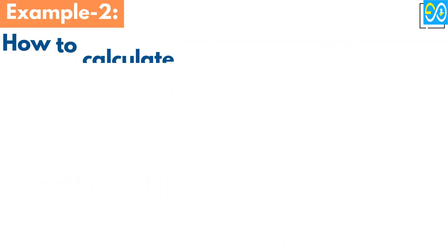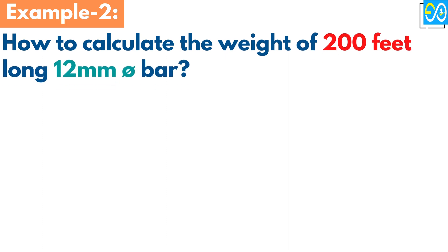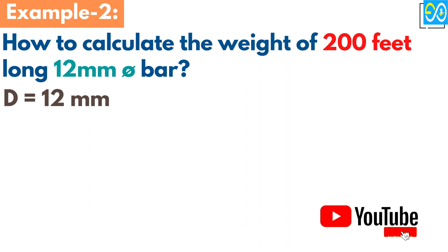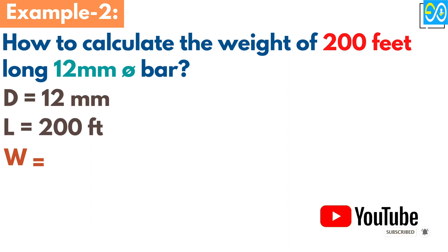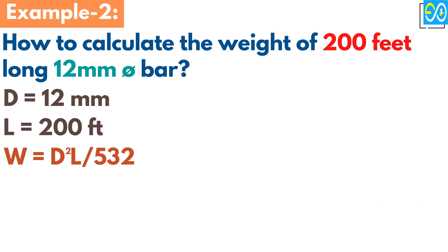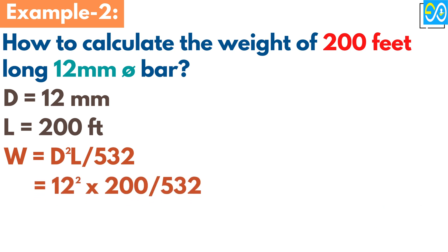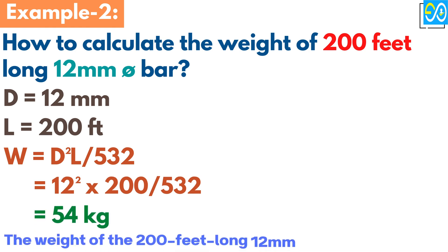Example 2: How to calculate the weight of a 200 feet long, 20 millimeters diameter bar. In this example, d equals 20 millimeters and l equals 200 feet. So, w equals d squared times l over 532, equals 20 squared times 200 over 532, equals 54 kilograms. The weight of the 200 feet long, 20 millimeters diameter bar is 54 kilograms.